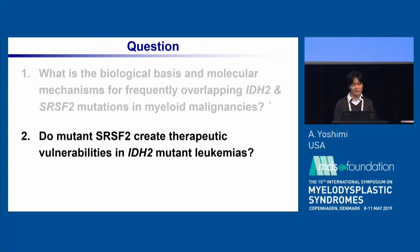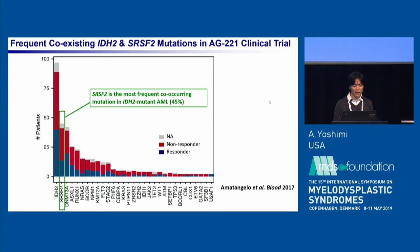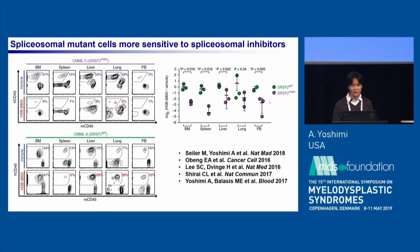I would now like to address the second question. This is a report from the AG-221 IDH2 inhibitor clinical trial. SRSF2 is the most frequently co-occurring mutation in IDH2 mutant AML. However, the overall response rate was only 33-34%, which is not high enough. Our group and others have shown that spliceosomal mutant cells are more sensitive to pharmacological inhibition of the spliceosome compared to wild-type cells.